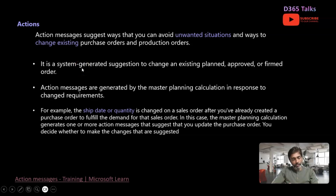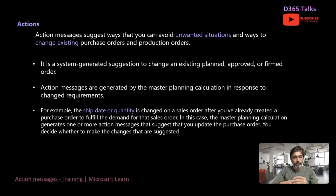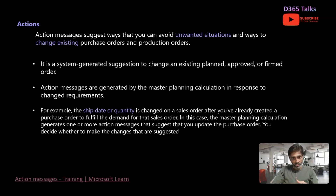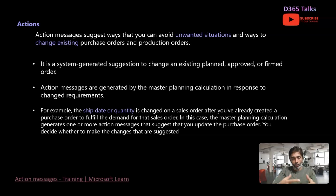So first of all, what is actions? What is this configuration all about? When we are generating planned orders — let's say we are running master planning today on January 1st — the planner decided to firm certain purchase orders on maybe January 2nd or 3rd, and the planned purchase orders are created and firmed. Now imagine on January 5th there is a change in the sales order requirement, which may be a change in the ship date or in the quantity. Because this change happened on January 5th but master planning was run on January 1st, this change has to be incorporated into the planned purchase orders which were generated.